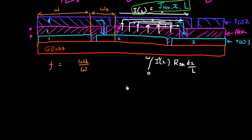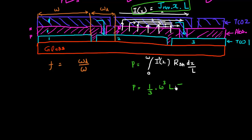So the total power loss, when I integrate it, would have essentially a one-third term and then a cubic dependence on the width of the cell. The other terms include an L term, a sheet resistance term, and the square of the maximum power current density. So this is my power which is essentially lost due to this I-squared-R loss.